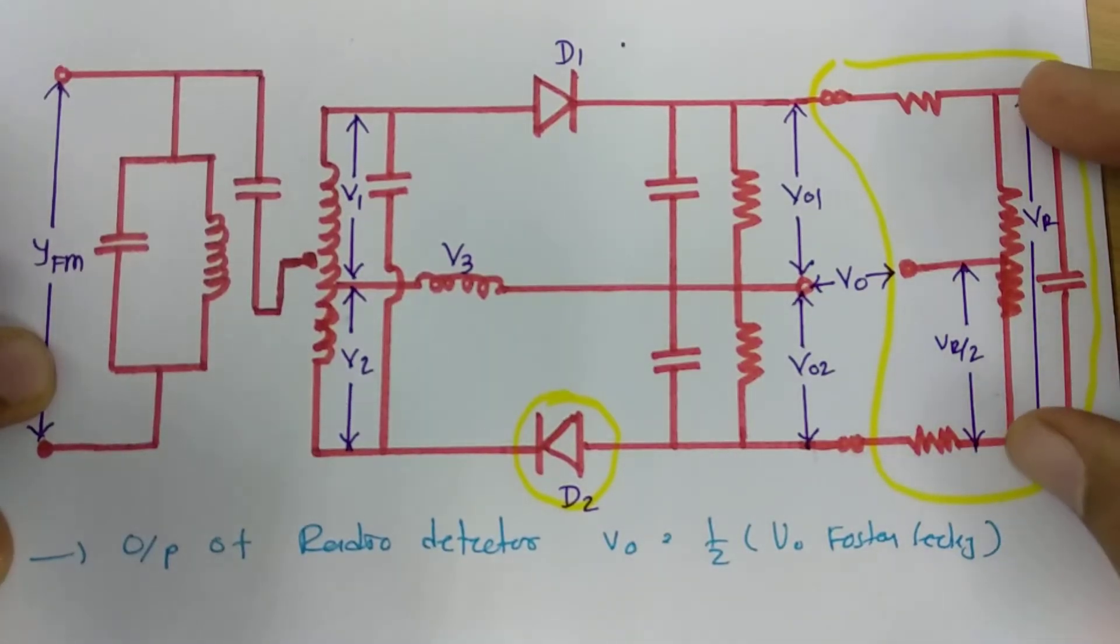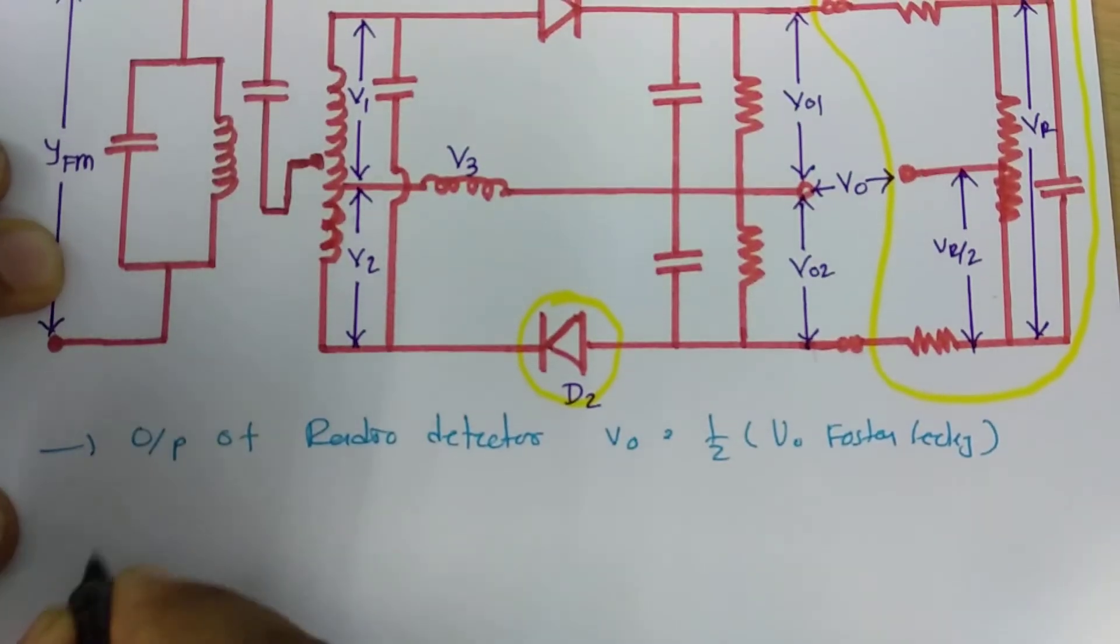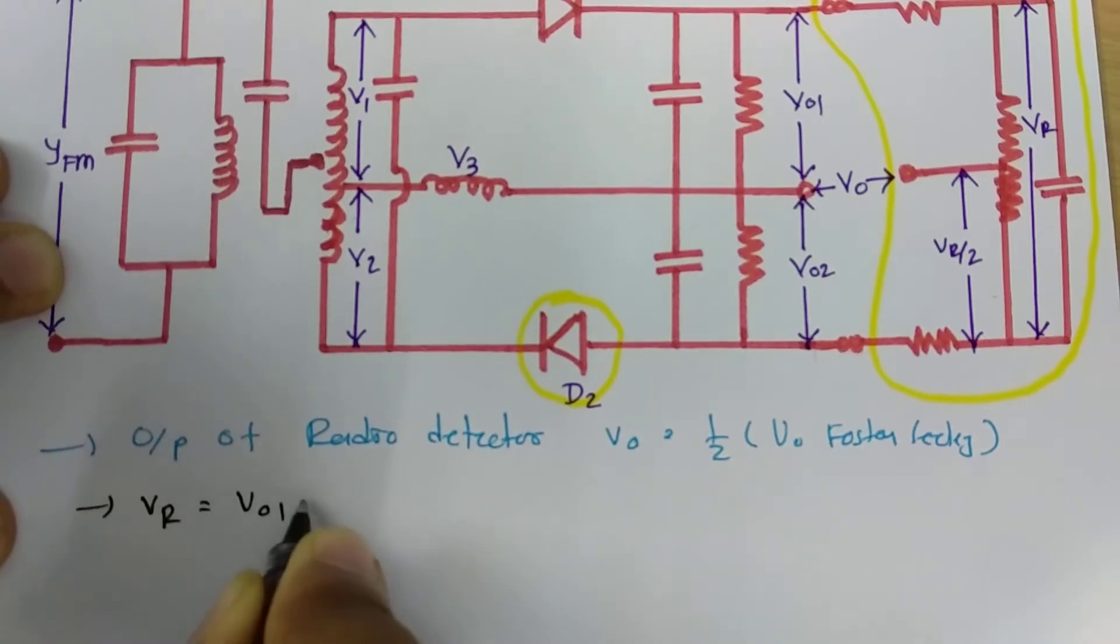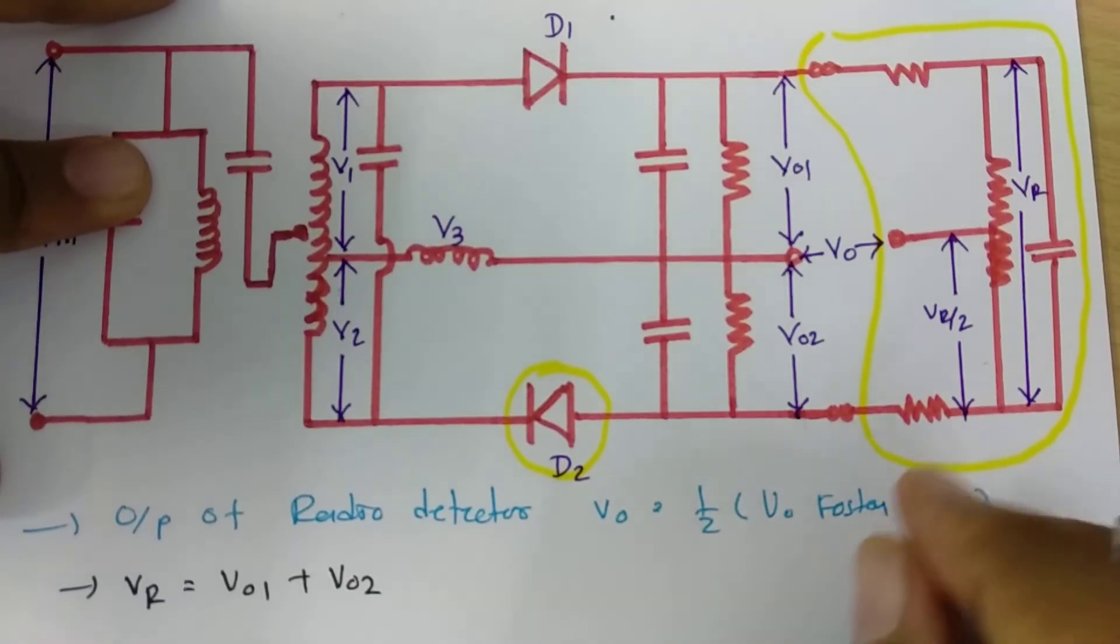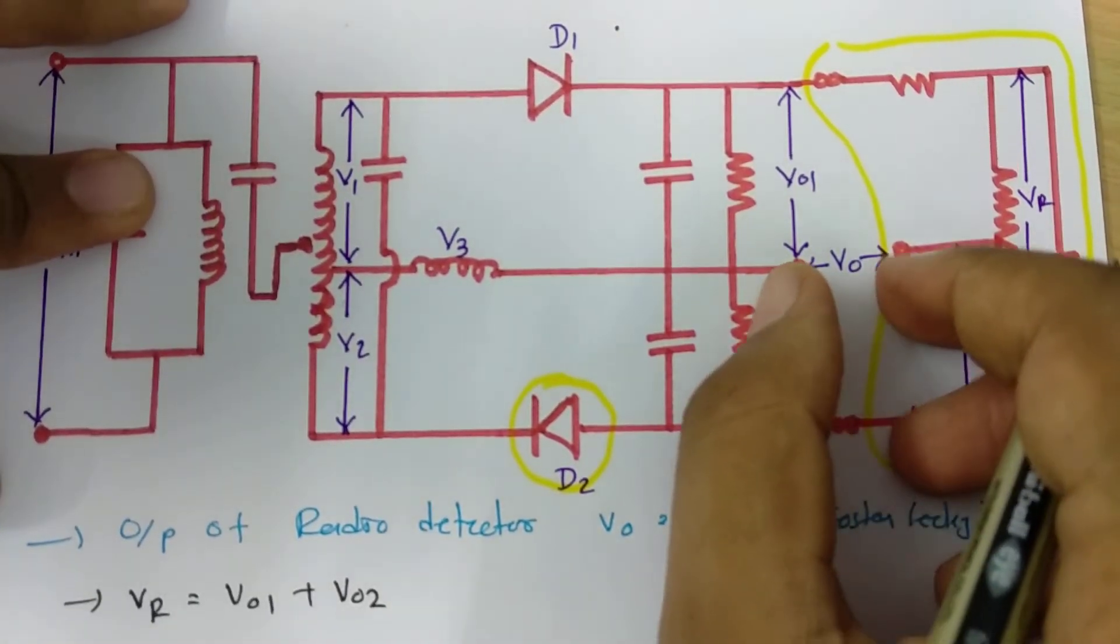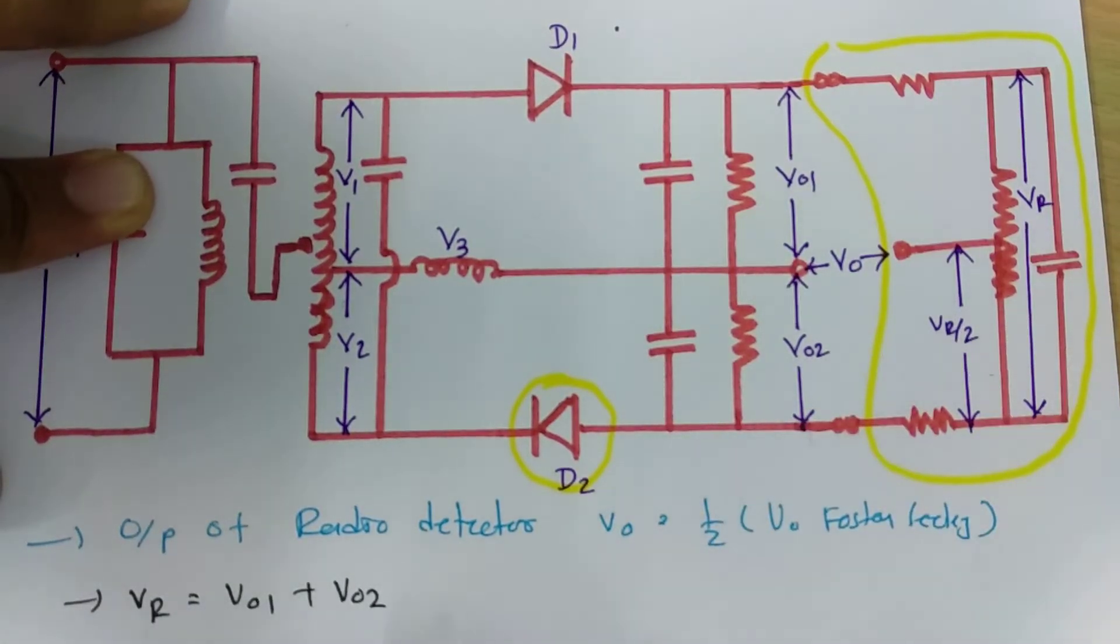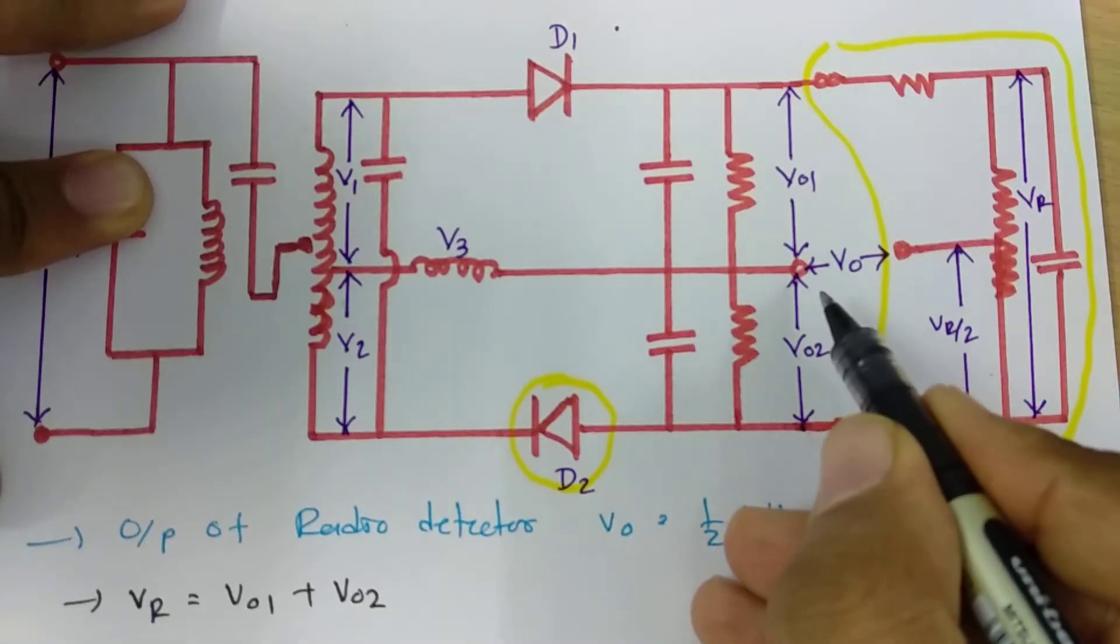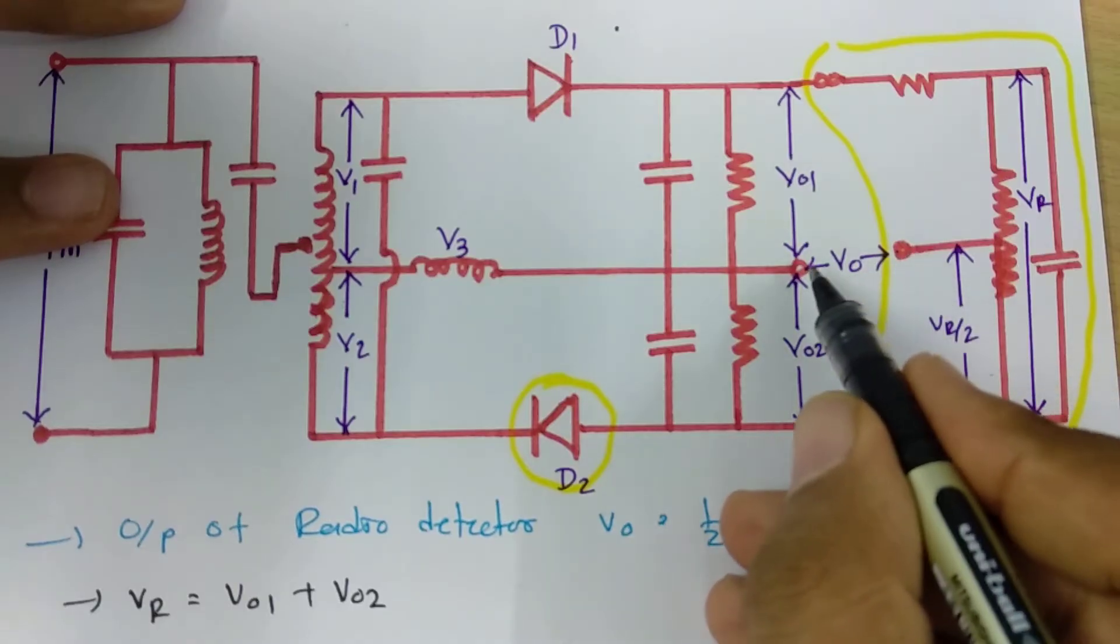So for that first of all we need to understand what is the voltage across VR. See over here, this voltage VR one can clearly see that is V01 plus V02. So VR voltage that is V01 plus V02. Now if you see the voltage output that is there in between these two terminals, output voltage that will be a difference in between these two terminal voltages.